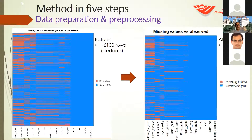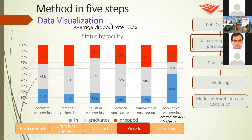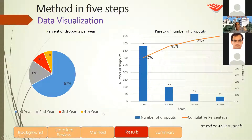We handled data preparation and pre-processing. Here we can see the dropout rate in our college. We have six engineering departments. The industrial engineering department had the lowest dropout rate at 22%, while pharmaceutical engineering had the highest at 36%, with an average of 30% dropout. We can also see that most dropouts occur in the first year — about 67% — followed by the second year at 18%, the third year at 9%, and the fourth year at 6%.